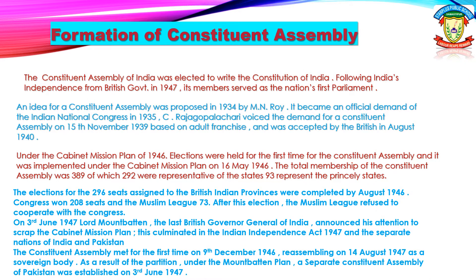The Constituent Assembly of India was selected to write the Constitution of India. Following India's independence from the British government in 1947, its members served as the nation's first parliament. An idea for a Constituent Assembly was proposed in 1934 by M.N. Roy. It became an official demand of the Indian National Congress in 1935. C. Raja Gopalachari voiced the demand for a Constituent Assembly on 15 November 1939, based on adult franchise, and was accepted by the British in August 1940.